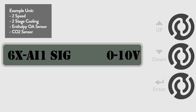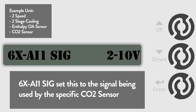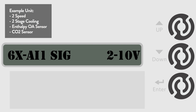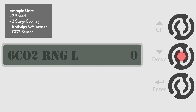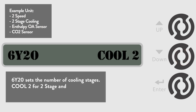Now scroll to the 6 AUX AI1 SIG menu to set what type of signal is sent to the CO2 sensor. The default is 0 to 10 volts, but for this example we are going to change it to 2 to 10 volts. Now let's go to 6Y20. This sets the number of cooling compressors. The default is COOL2 for two compressors. If your unit only has one compressor, change this setting to none.